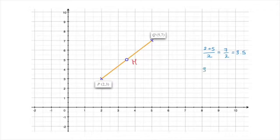That's 3 plus 7 over 2, which equals 10 over 2, which equals 5. And we now have both the X and the Y coordinates of the midpoint. In other words, we can state that M has coordinates 3.5 and 5.